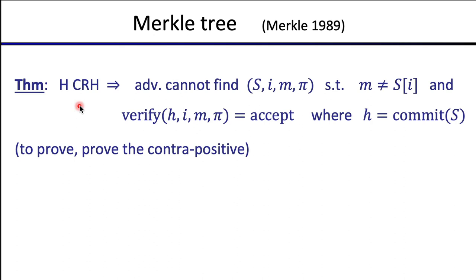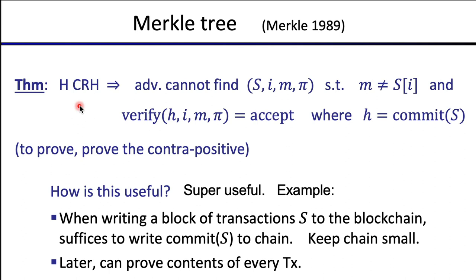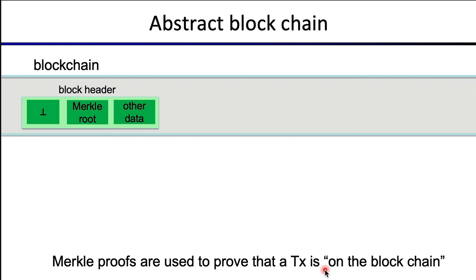So what is this all useful for? We're able to commit to a large list of values and later open a particular element, proving it was opened correctly. When writing a block of transactions, the only thing written to the actual blockchain is a commitment to the block of transactions. Later, anyone can prove that a particular transaction is in the block by providing a Merkle proof. It's an easy way to commit to a large list of transactions using a very short commitment. When you think about what a blockchain is, it really is just a bunch of Merkle root commitments.